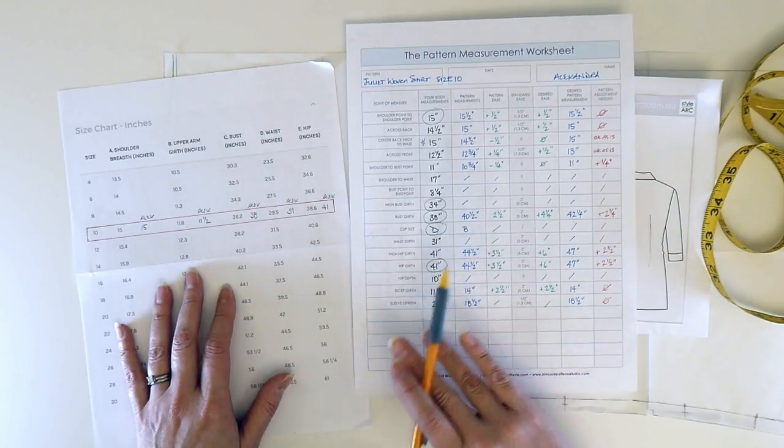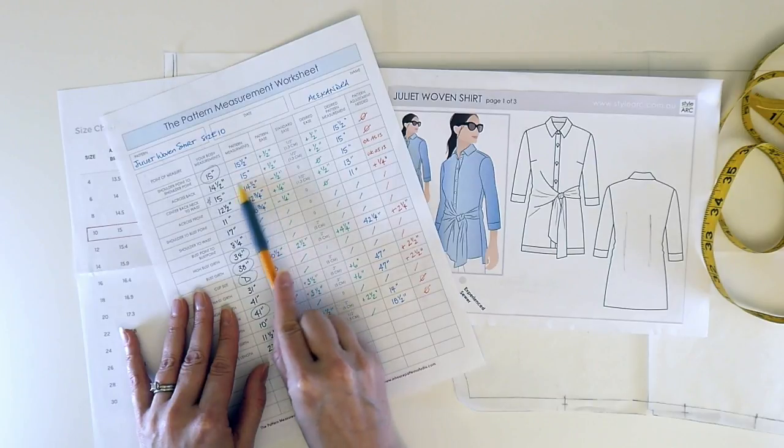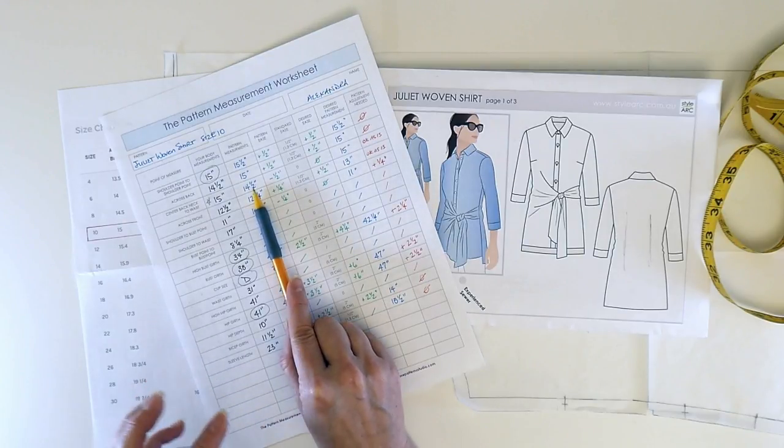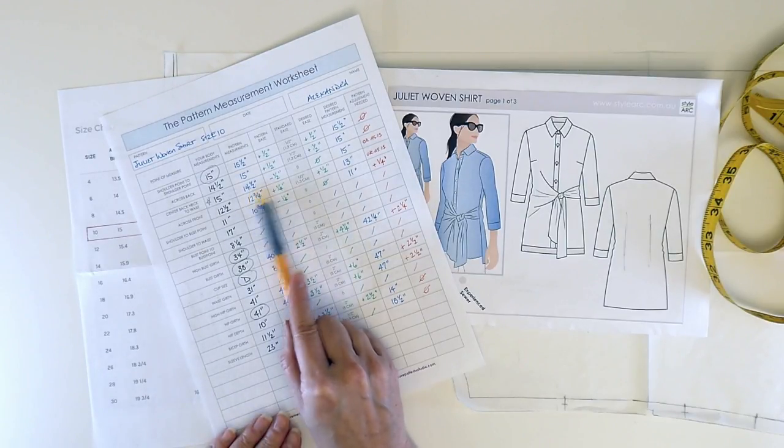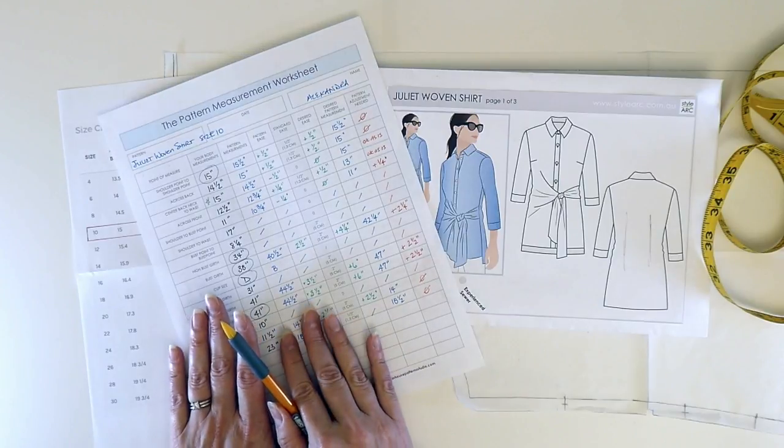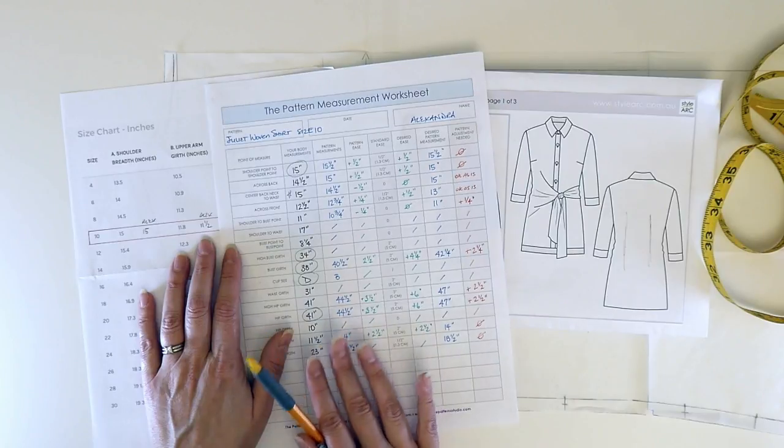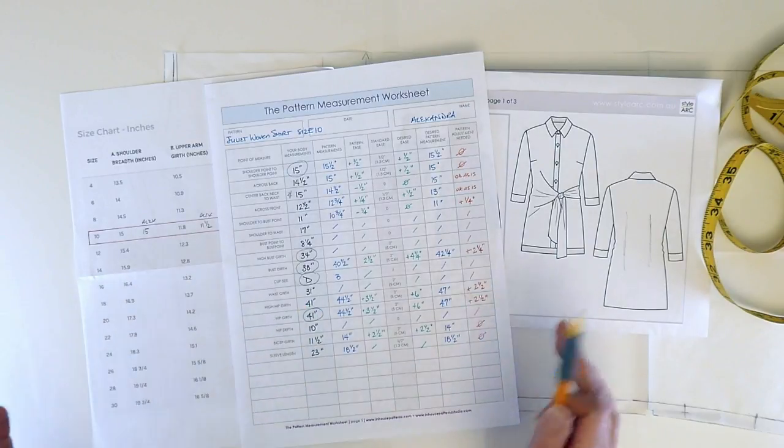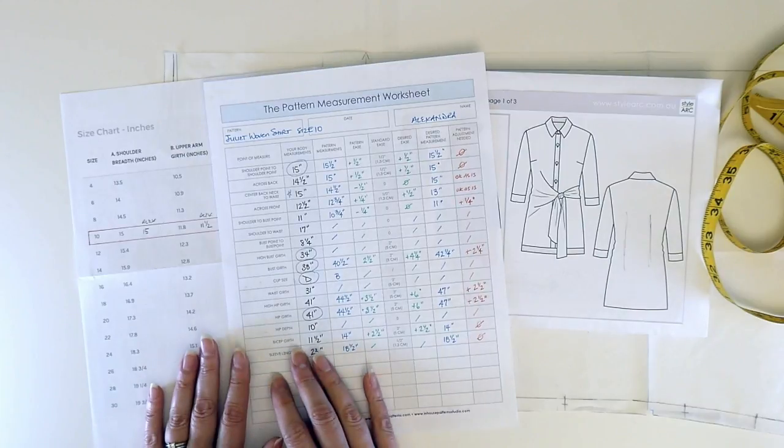Now, lucky for me, as I said, my center back neck to waist measurement, I didn't need to adjust because it was already at 14 and a half inches, which is actually a little bit shorter than mine, but it's fine. It being a little bit high actually worked in my favor because it's going to kind of skim over my hips a little bit better. So that's how I determined the size. That's how I measured the pattern and compared the pattern company's body measurements to my body measurements. So I determined what my size is and I've also determined what initial adjustments I'm going to need to make very quickly.